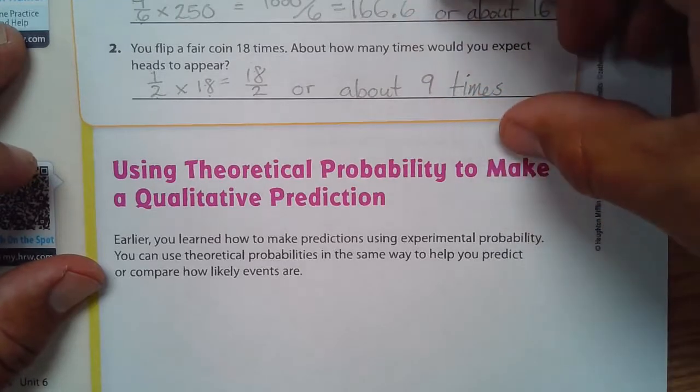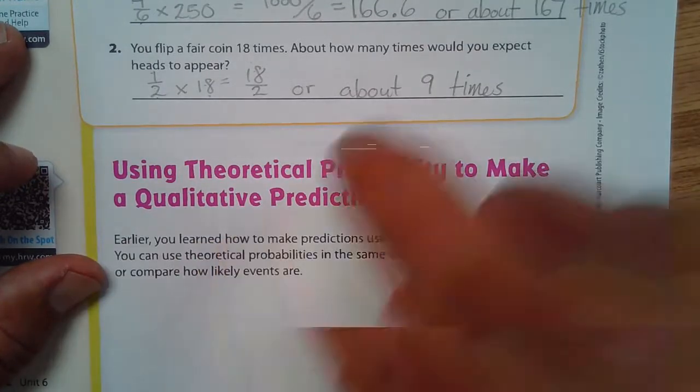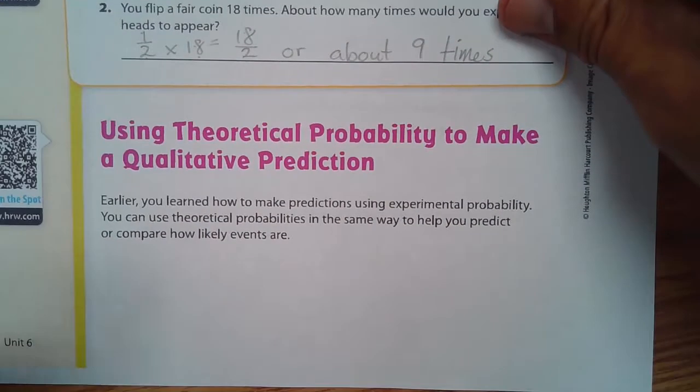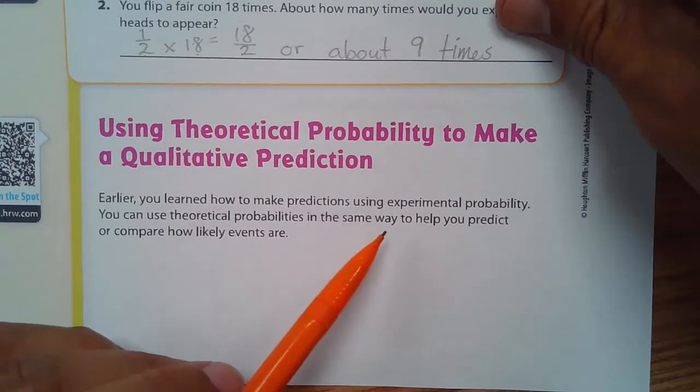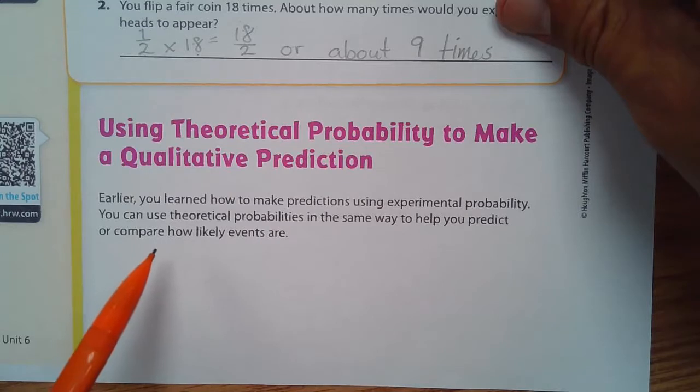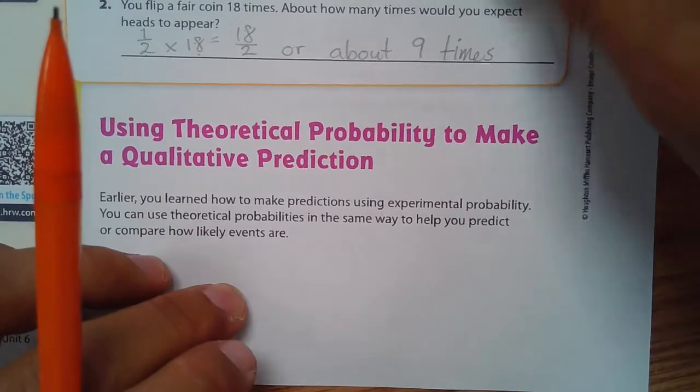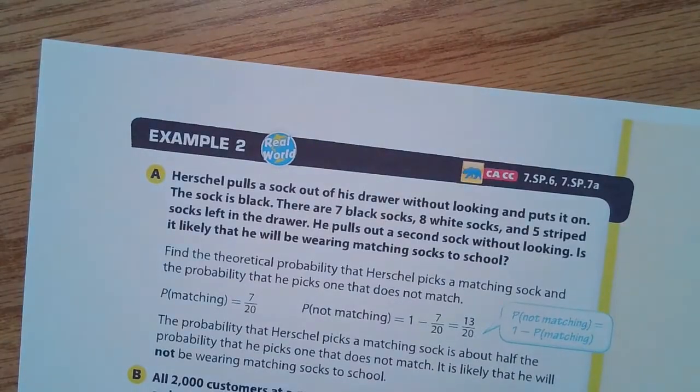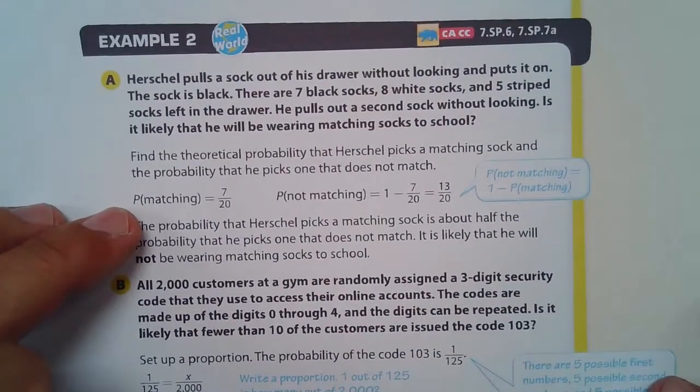Using theoretical probability to make a qualitative prediction. Earlier, you learned how to make predictions with experimental probability. You can use theoretical probabilities in the same way to help you predict or compare how likely events are. Okay. So we have this and our qualitative predictions, using values here.